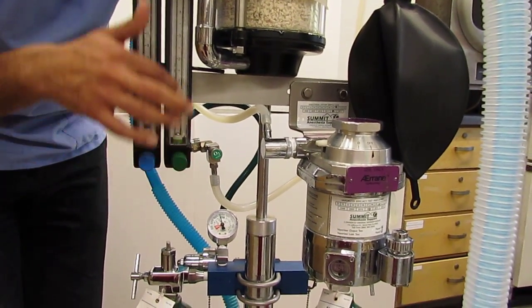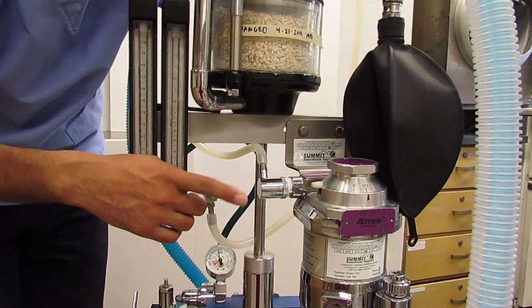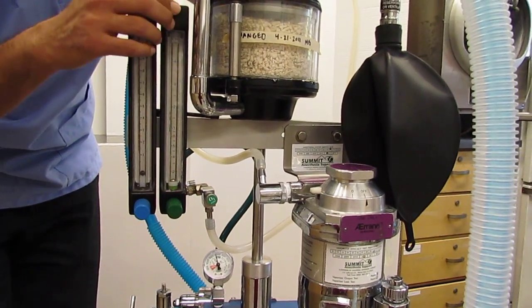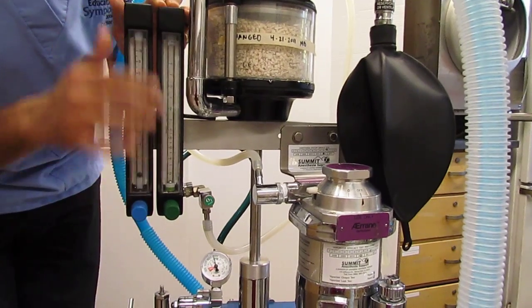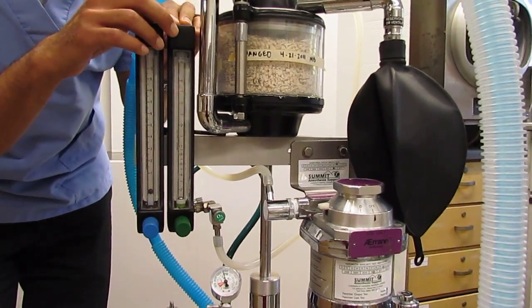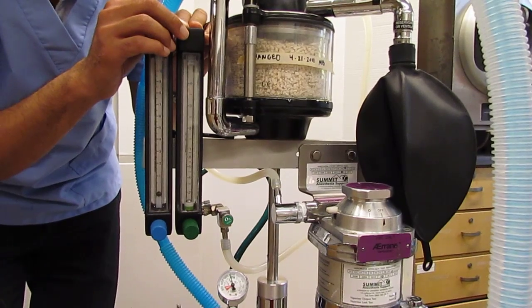If I continue through my flow meter, and we'll talk about the vaporizer in a little bit, but if I continue through my flow meter, I will reduce my 50 psi oxygen down to about 12 to 15 psi, okay?